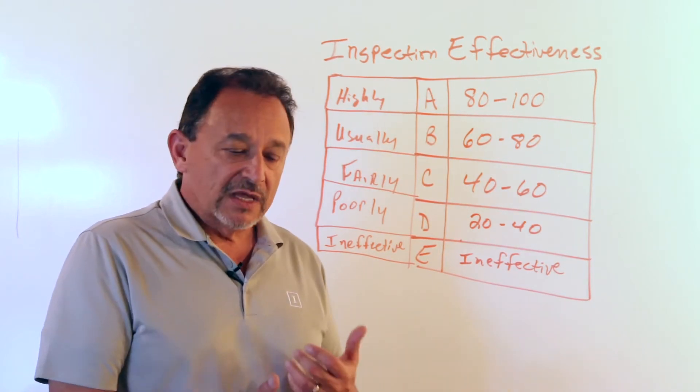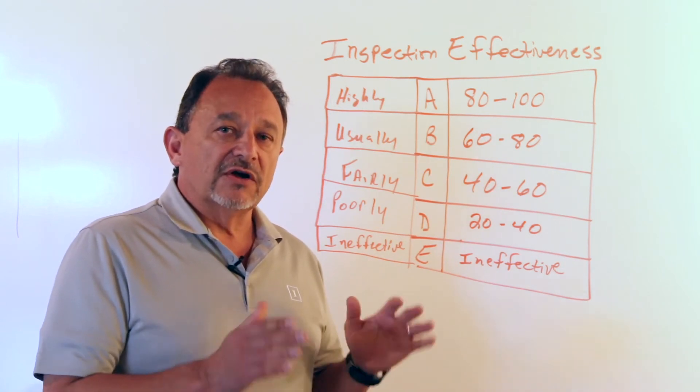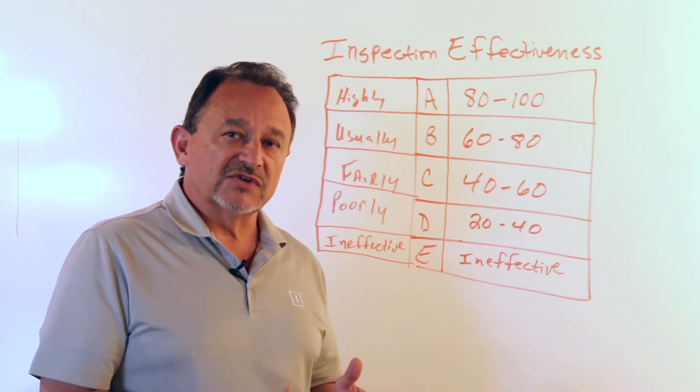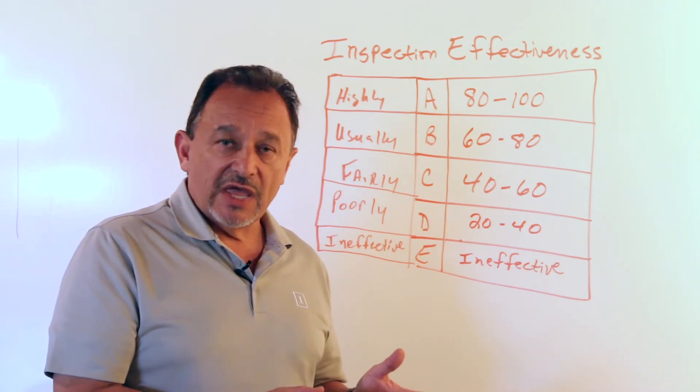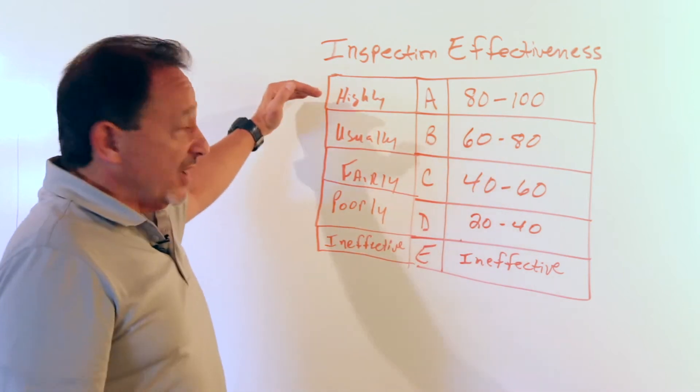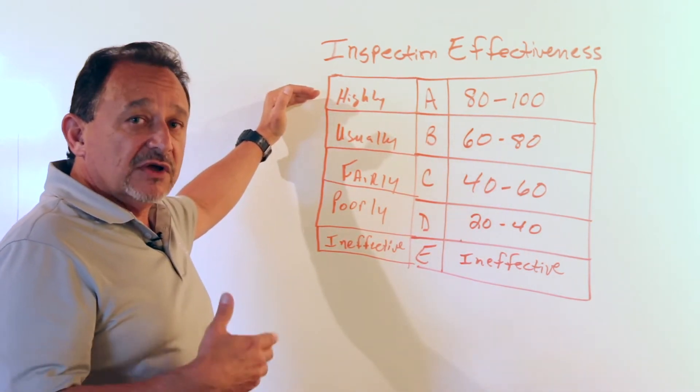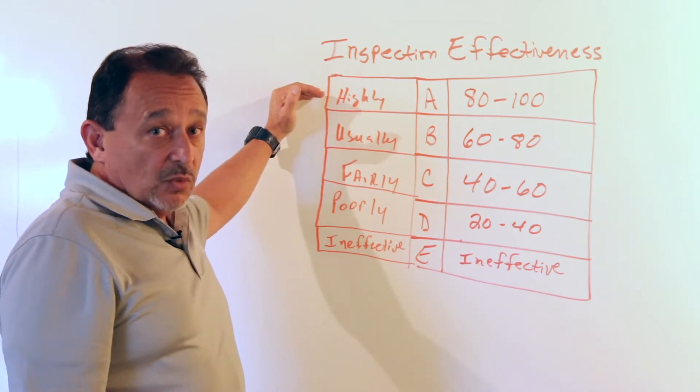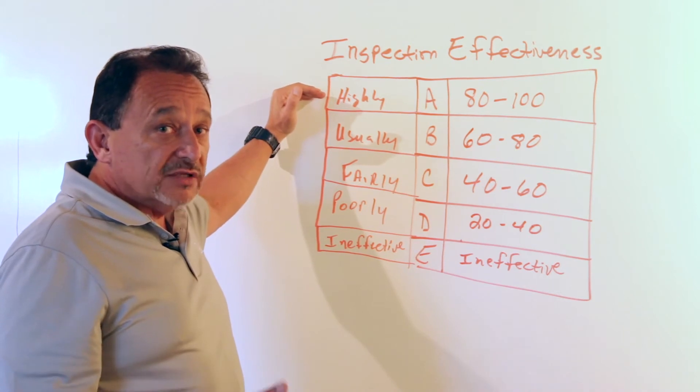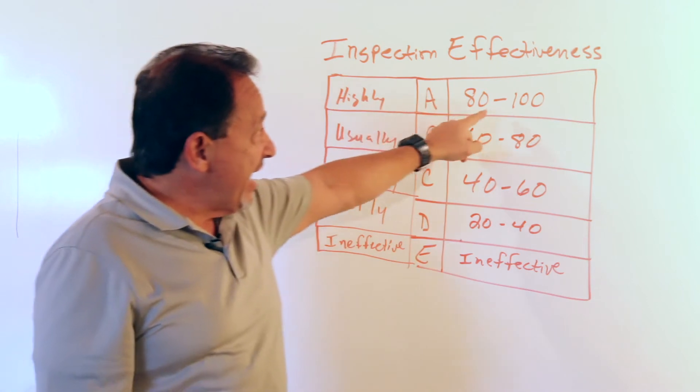So in the API 581 document, there are various different inspection effectiveness tables for different damage mechanisms. And the intent there, so that we can use them in a consistent Bayesian logic for management and metrics, is that an A level strategy, which may include more than one inspection technique, finds that damage 80 to 100 percent of the time.